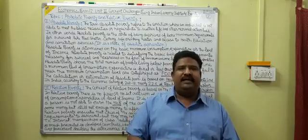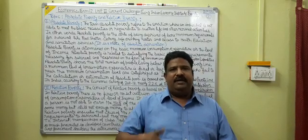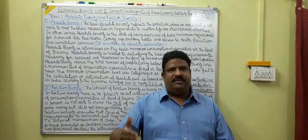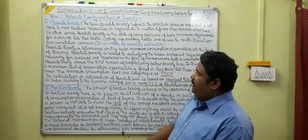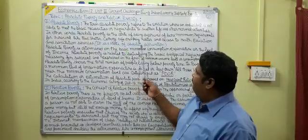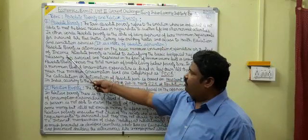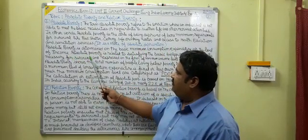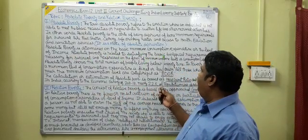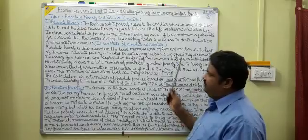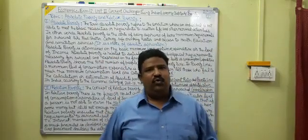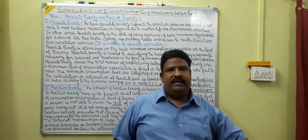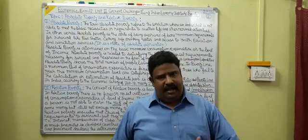A person needs to spend some money to acquire the basic minimum commodities required for life - this is known as the basic minimum expenditure, expressed in the form of money or income. Absolute poverty is determined on the basis of minimum consumption expenditure or income level, and is related to satisfying basic biological requirements necessary for survival.